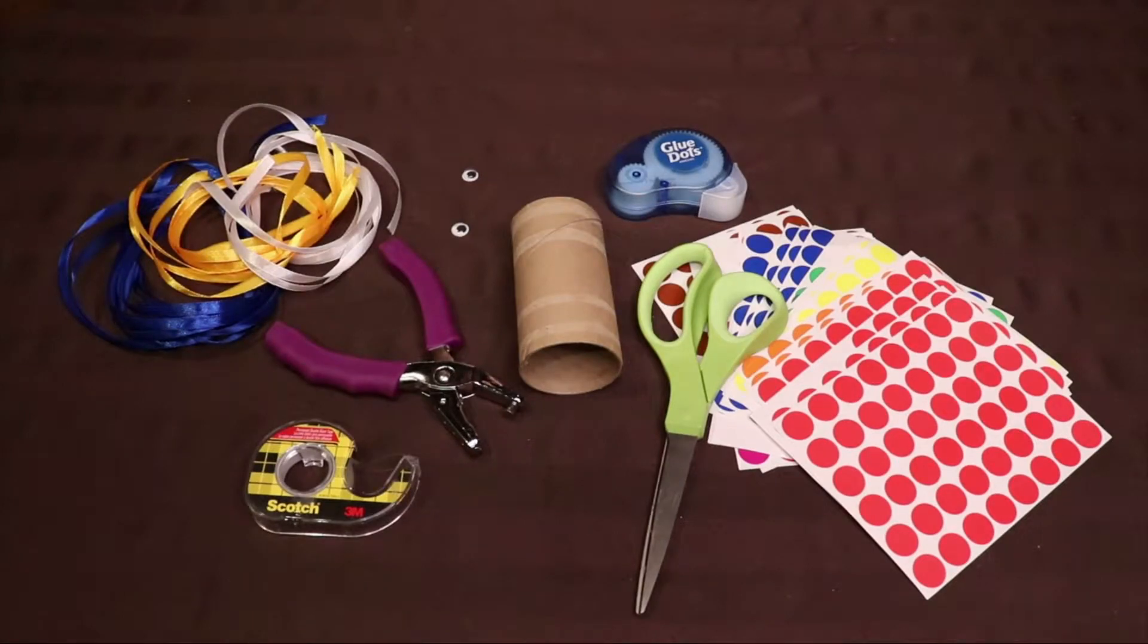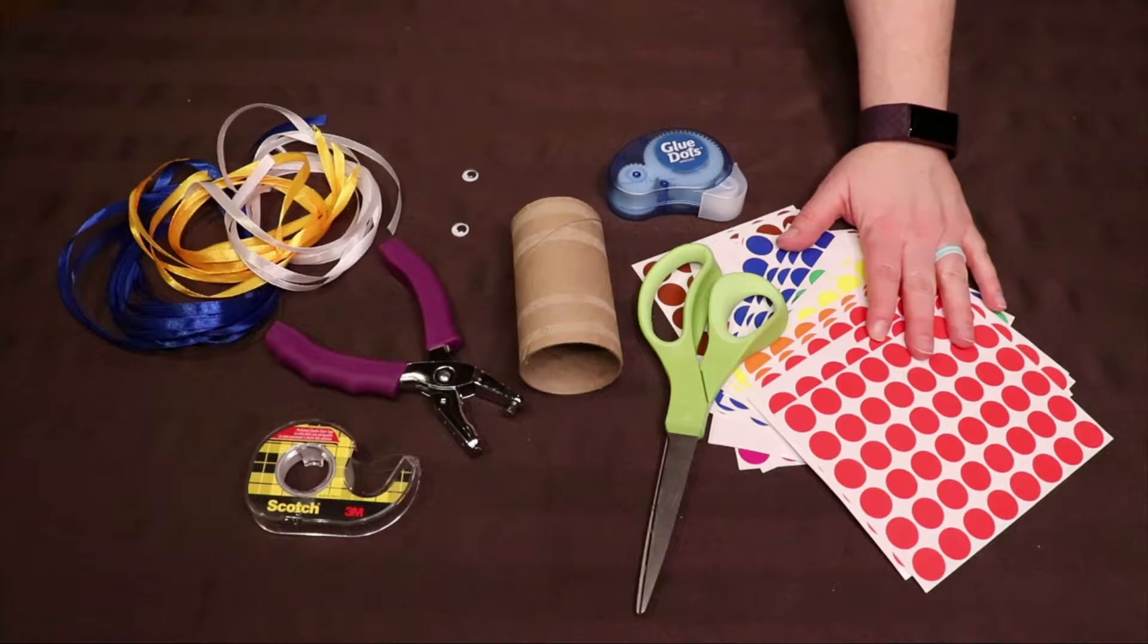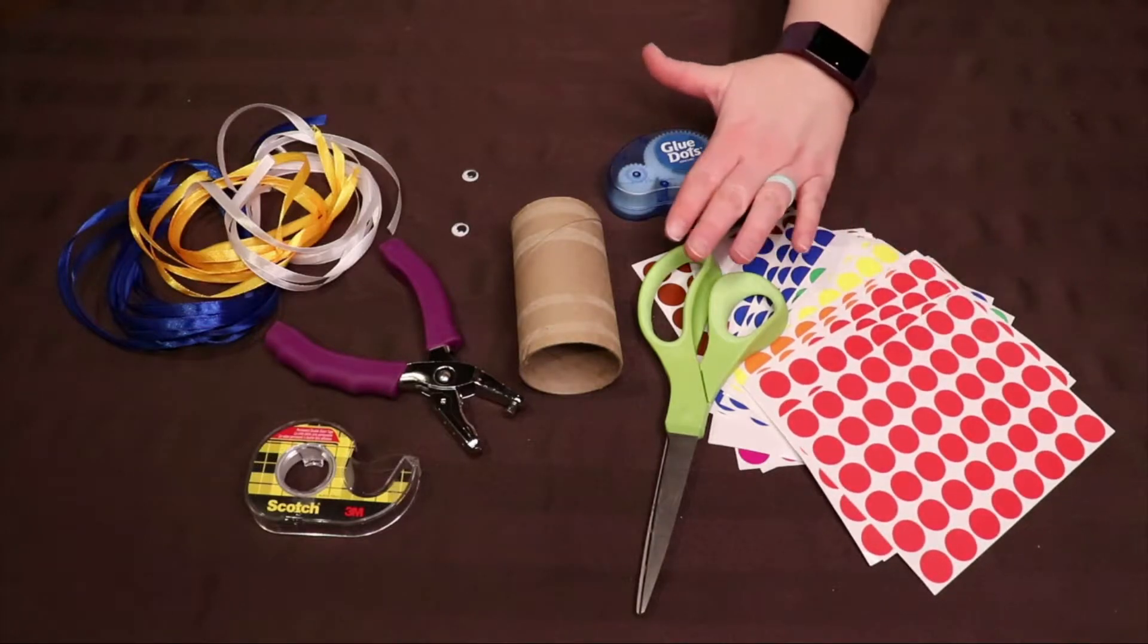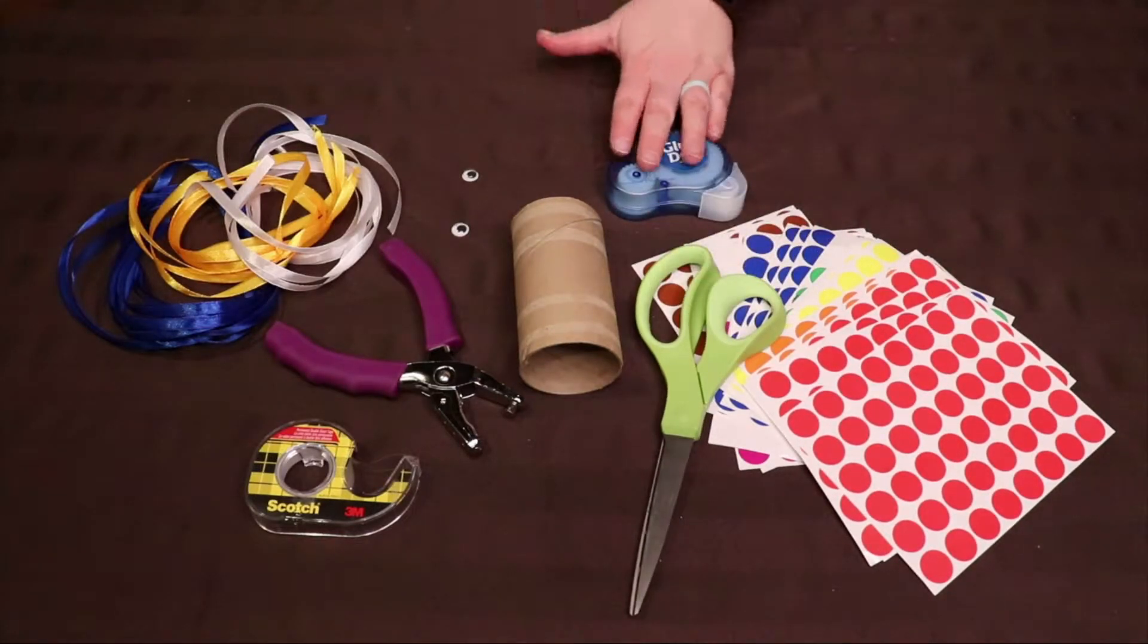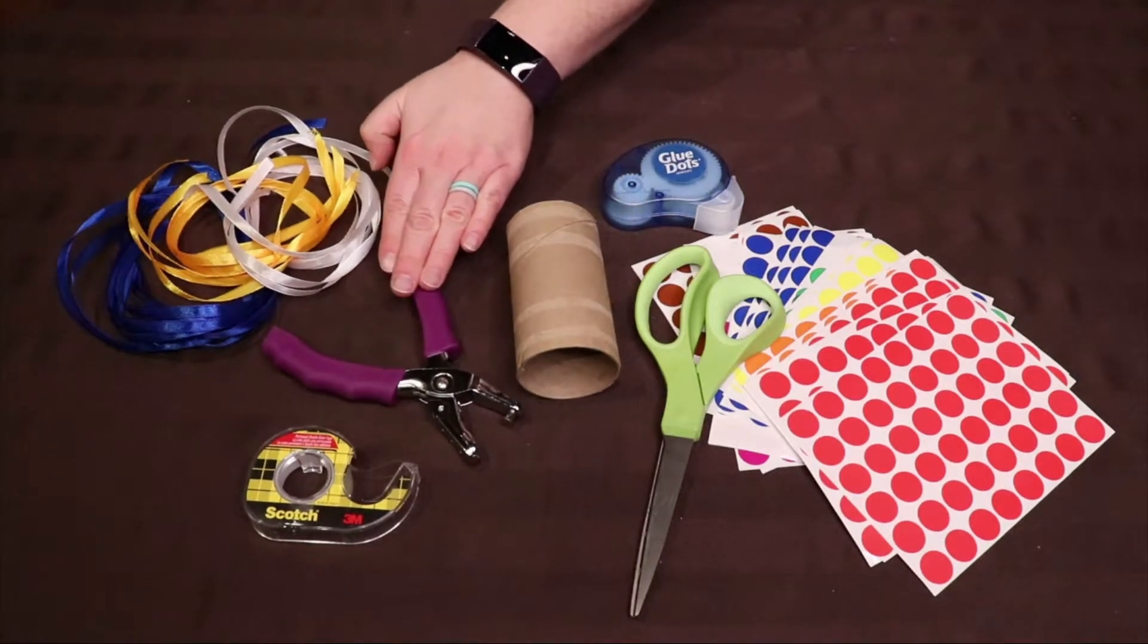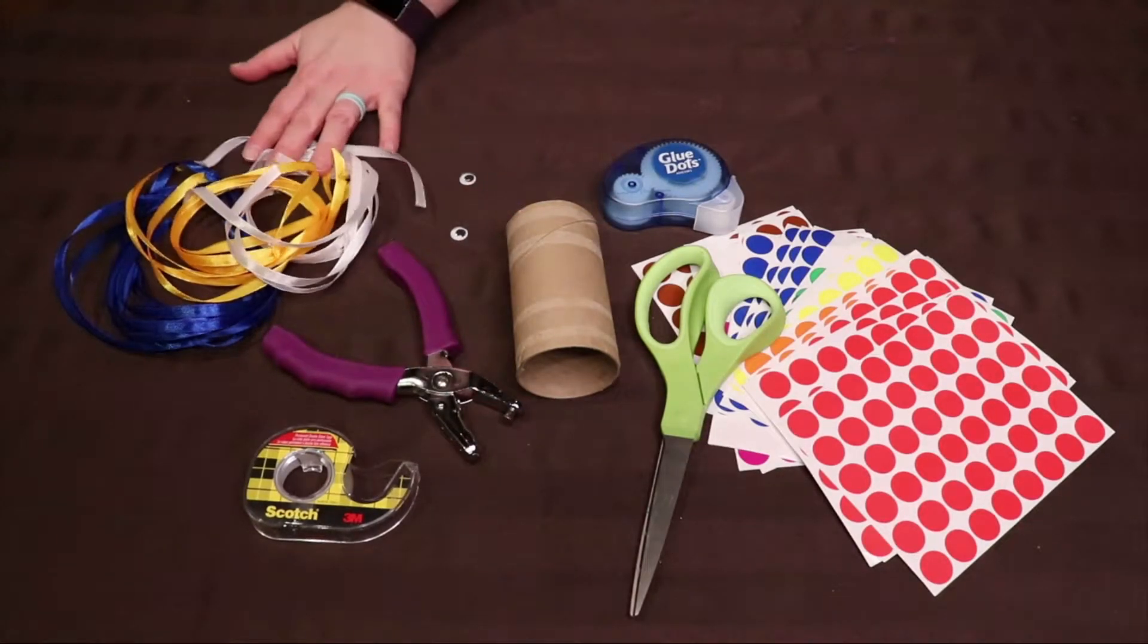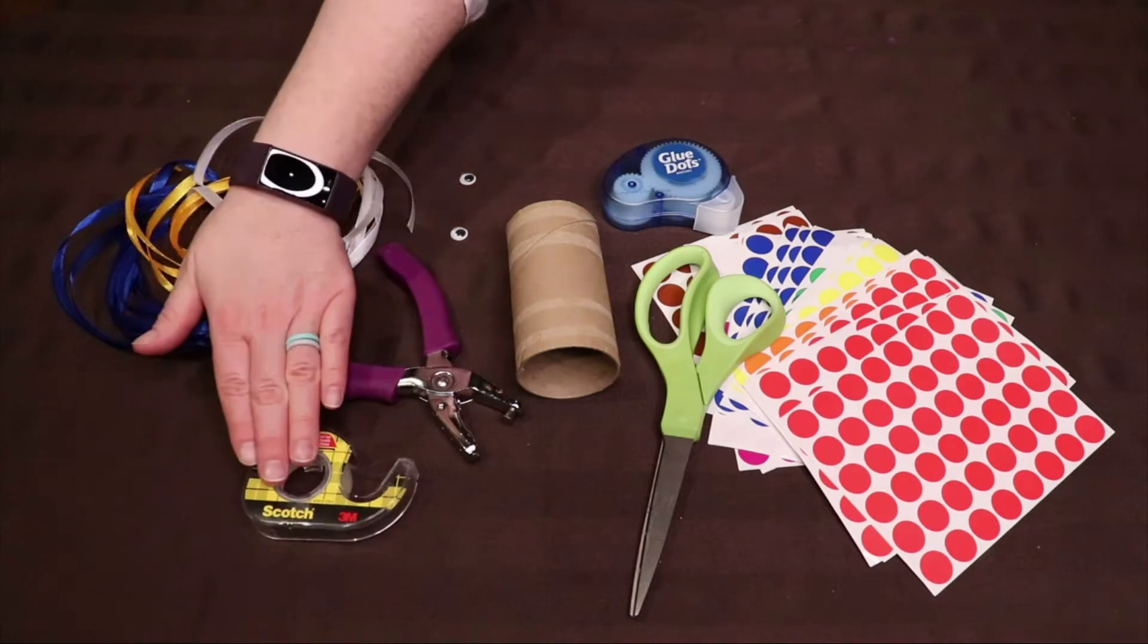To create your fish windsock, you will need a variety of different colors of circle stickers, a pair of scissors, some glue, either a toilet paper roll or a paper towel roll, a single hole punch, two googly eyes, some ribbon, and some double-sided tape.